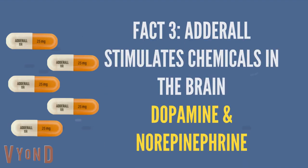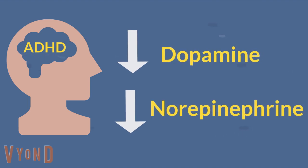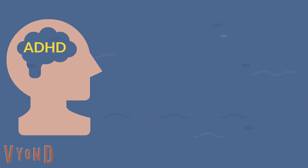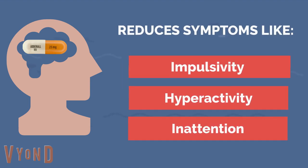Fact 3: Adderall stimulates chemicals in the brain such as dopamine and norepinephrine. Individuals with ADHD often have a deficiency of these chemicals within their brain. To combat this, Adderall increases the release of these molecules in the brain and prevents their breakdown. This allows for the reduction of symptoms of hyperactivity, inattention, and impulsivity.